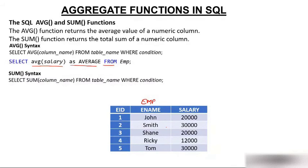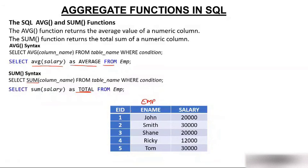Then comes the SUM syntax. Again the syntax is 100% the same — you just change the aggregate function name. In place of AVG you put SUM. SELECT SUM(salary) AS total FROM M. The new column name will be 'total'. You will get the total salaries as 1,12,000. Five employees of the organization are getting a combined salary of 1,12,000.